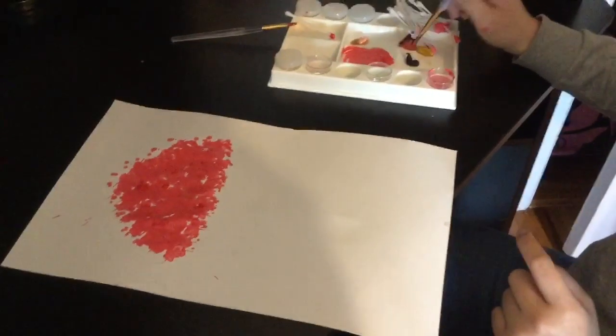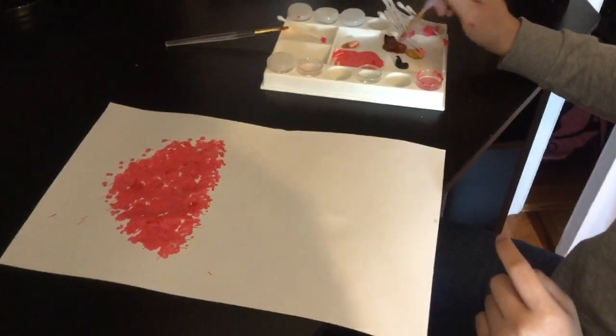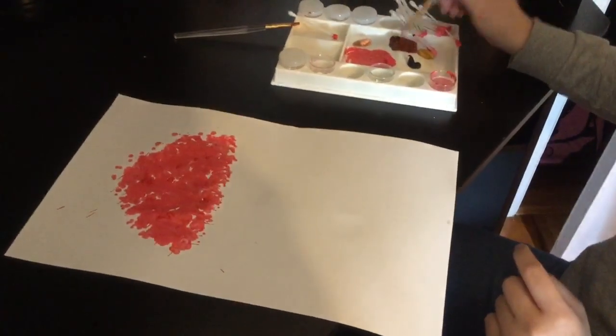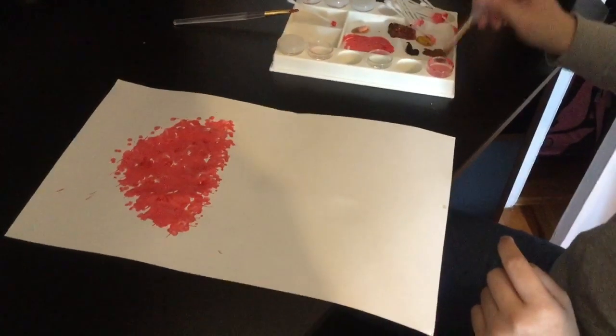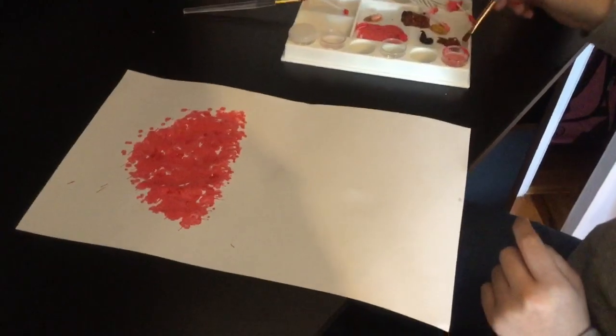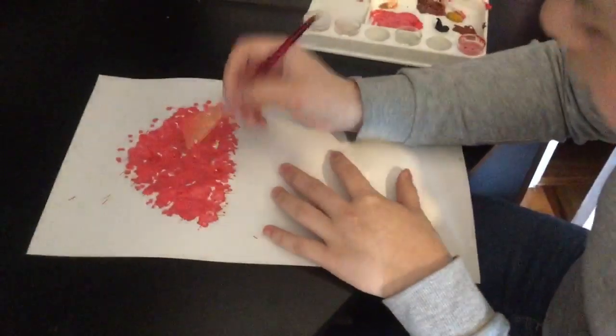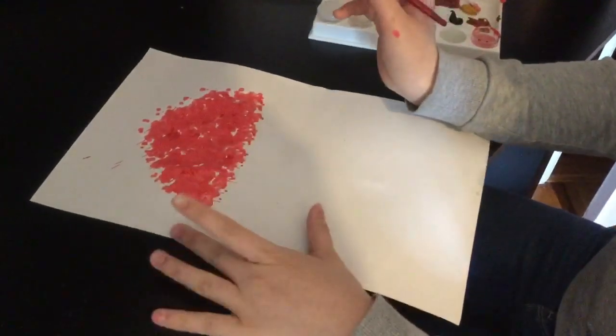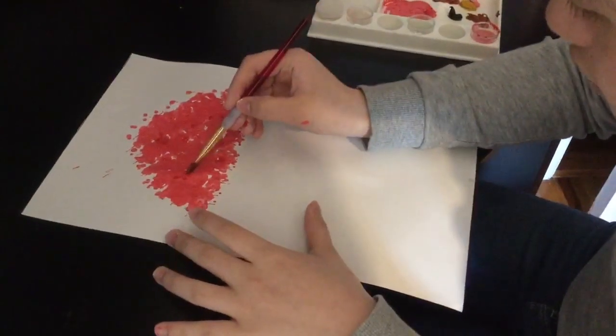So now we're going to mix this white brown with this dark brown together. We're going to draw the branches. Really easy. And make sure you don't gather too much paint. Now, wait for it to dry a little, and then we could start drawing the branch.